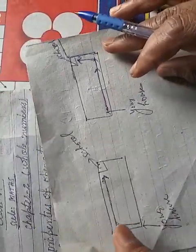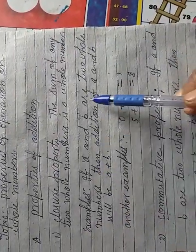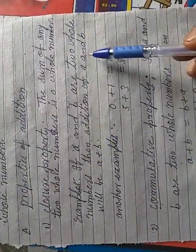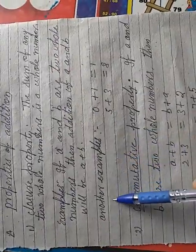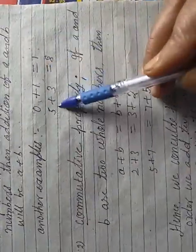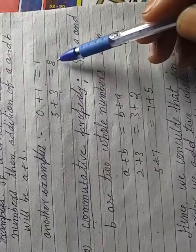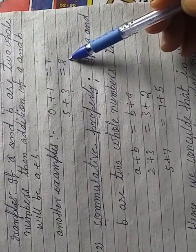And here also we have to move in this way and here we can reach the school. It means here are two ways. So we can write here the property, the sum of any two whole numbers. So if a and b are two whole numbers, then additions of a and b will be a plus b. As for example is given, 0 plus 1 is equal to 1, 5 plus 3 is equal to 8. So here 1 and 8 are whole numbers.